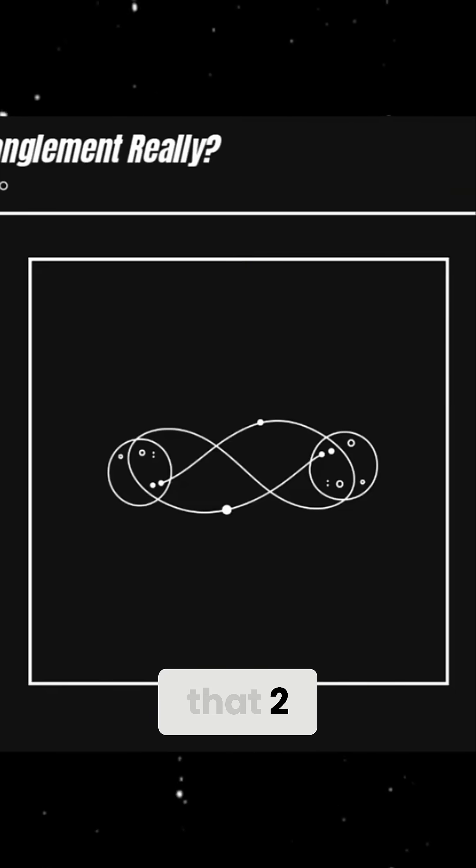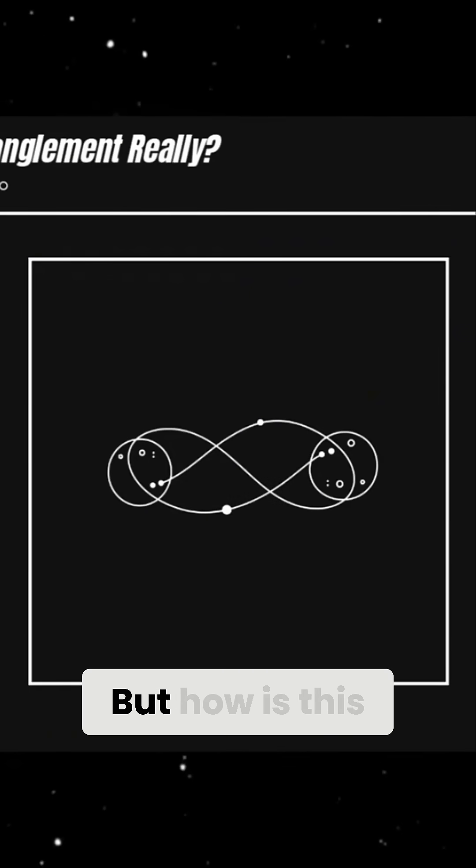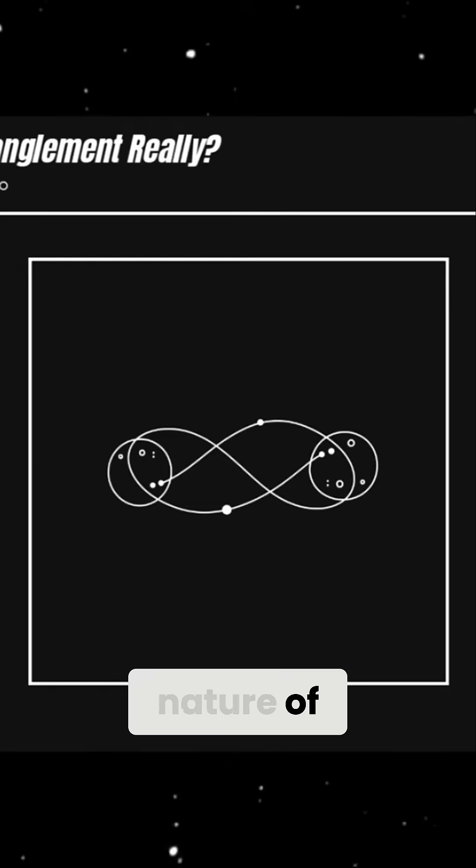It suggests that two particles can be instantly connected, no matter how far apart they are, even across the entire universe. But how is this possible? Does it mean that information can travel faster than light? And what does it reveal about the true nature of reality?